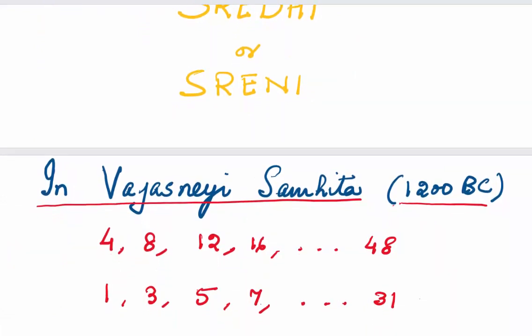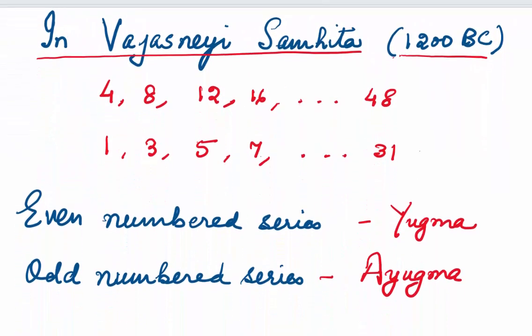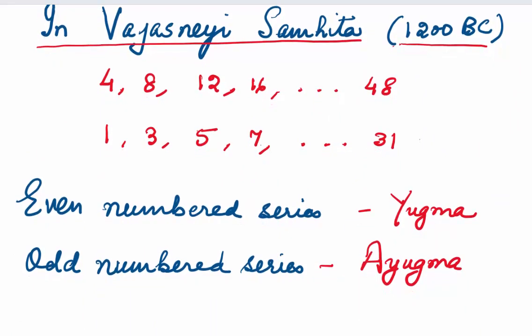In Vajasnai Samhita, which dates back to 1200 BC, you can see some arithmetic progressions. The first one: 4, 8, 12, 16, going up to 48 — first term being 4, common difference being 4, and the nth term being 48. Look at the second arithmetic progression: 1, 3, 5, 7, going up to 31 — first term is 1, common difference is 2, and nth term is 31. They are called 'yugma' for even-numbered series and 'ayugma' for odd-numbered series in Vajasnai Samhita.